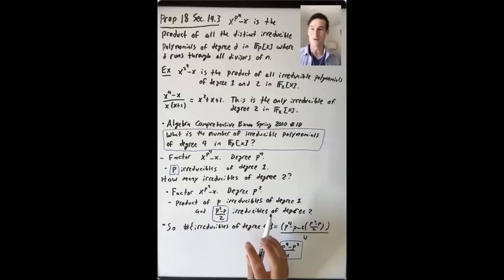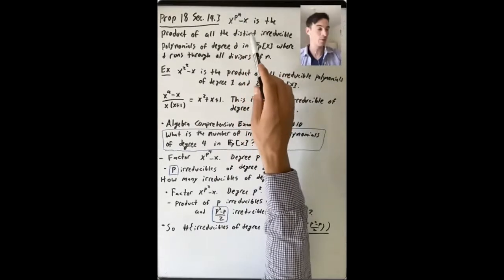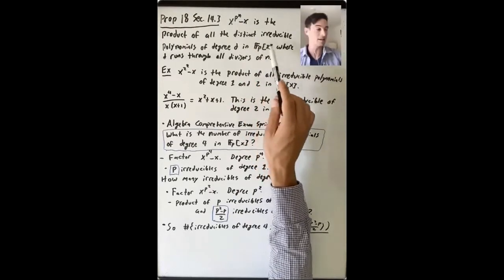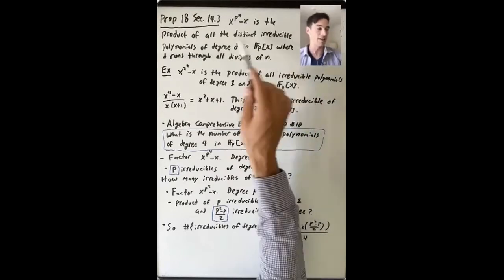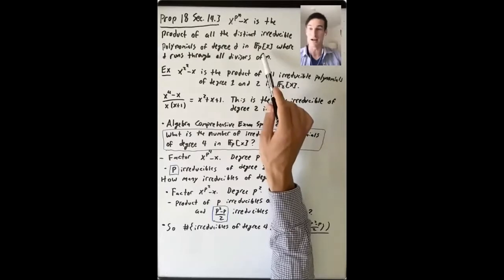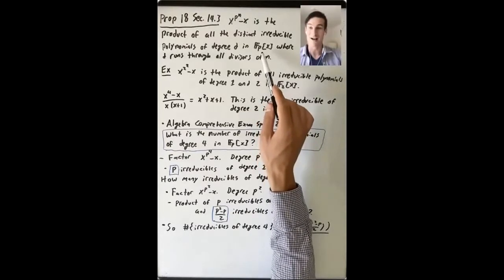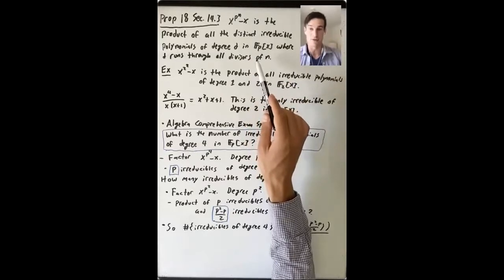In this video, we'll focus on Proposition 18 in section 14.3, which says that x to the p to the n minus x is the product of all the distinct irreducible polynomials of degree d in F_p[x], where d runs through all the divisors of n. When I say distinct irreducible polynomials, I mean distinct monic irreducible polynomials.